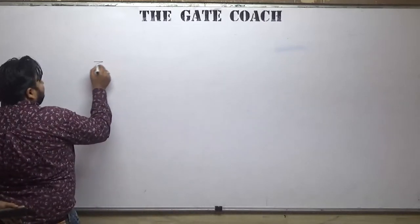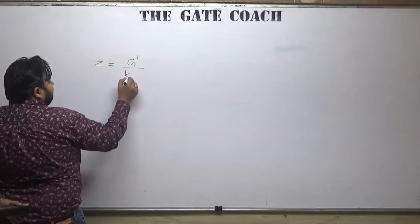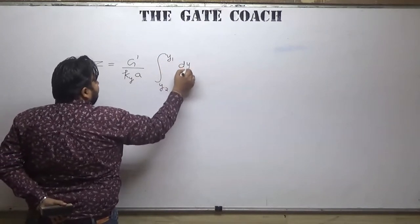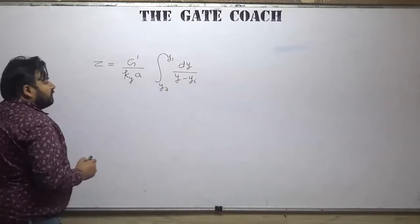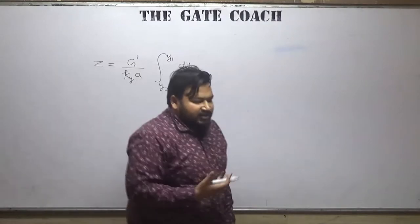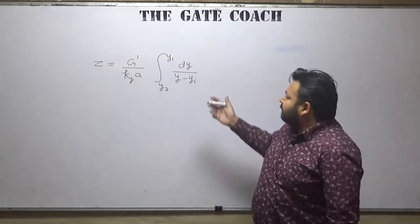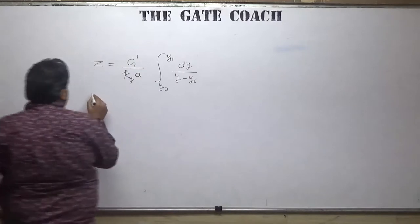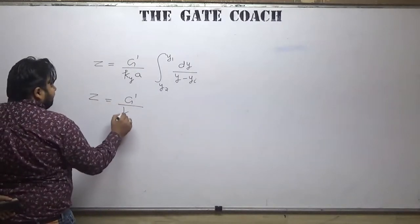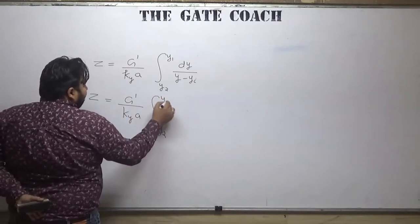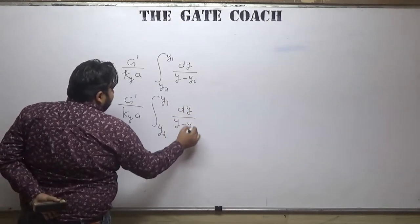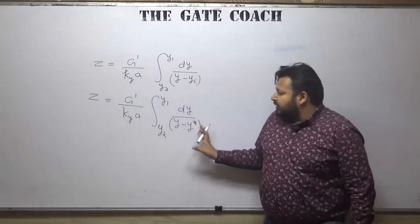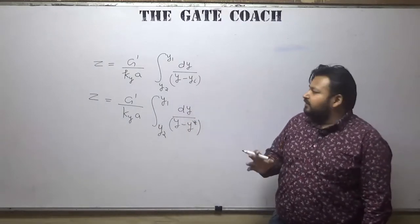In the height of the packing tower there is an expression — always remember that expression. The expression is: integral from y2 to y1 of dy over (y minus yi). This is the expression in the interfacial or individual regime. If we derive the same expression in the overall region, then the expression will be (G-dash over capital K_Y times A) times integral from y2 to y1 of dy over (y minus y-star).